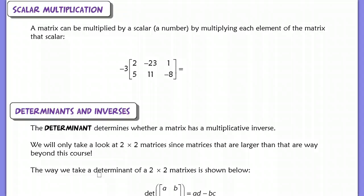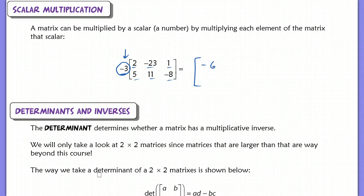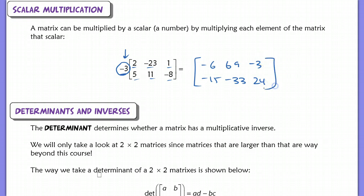A number can always be multiplied by a matrix — this is called scalar multiplication. Scalar just means any number on the outside of your matrix. What that does is multiply every single number within the matrix by that number. So my new matrix — it doesn't change the dimension — will have negative 6, then positive 69, negative 3, negative 15, negative 33, and positive 24 in that last row, last column. You're just multiplying each single term by the number on the outside. That's what scalar multiplication is.